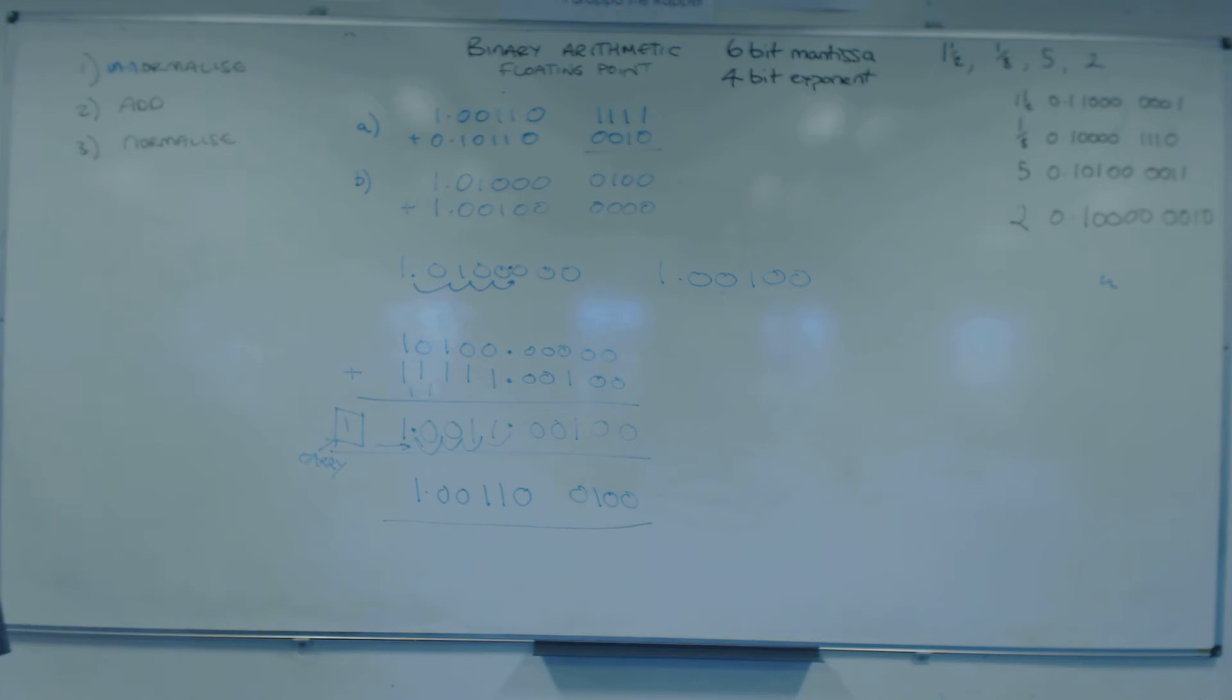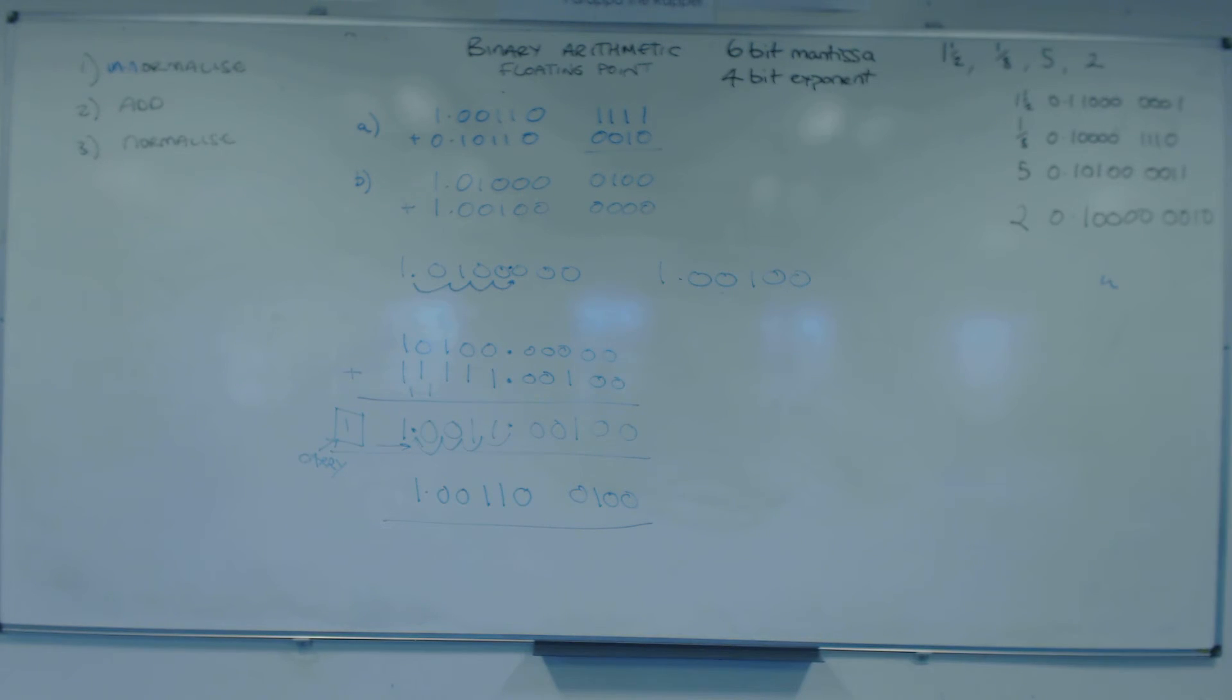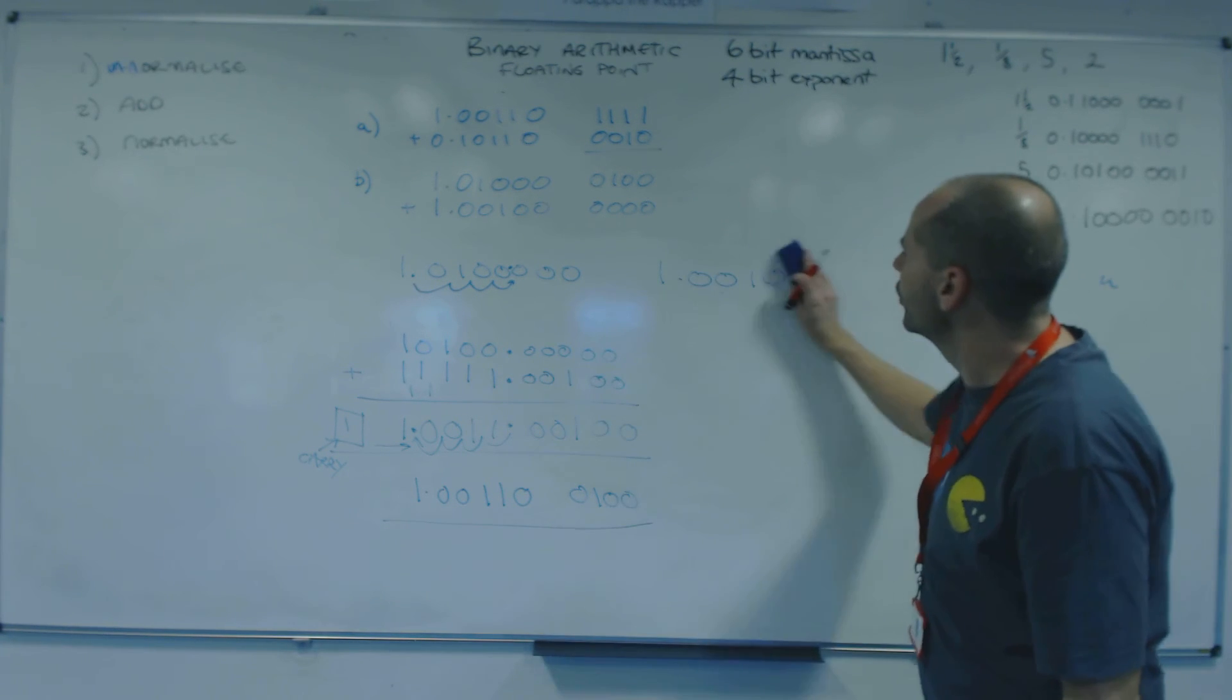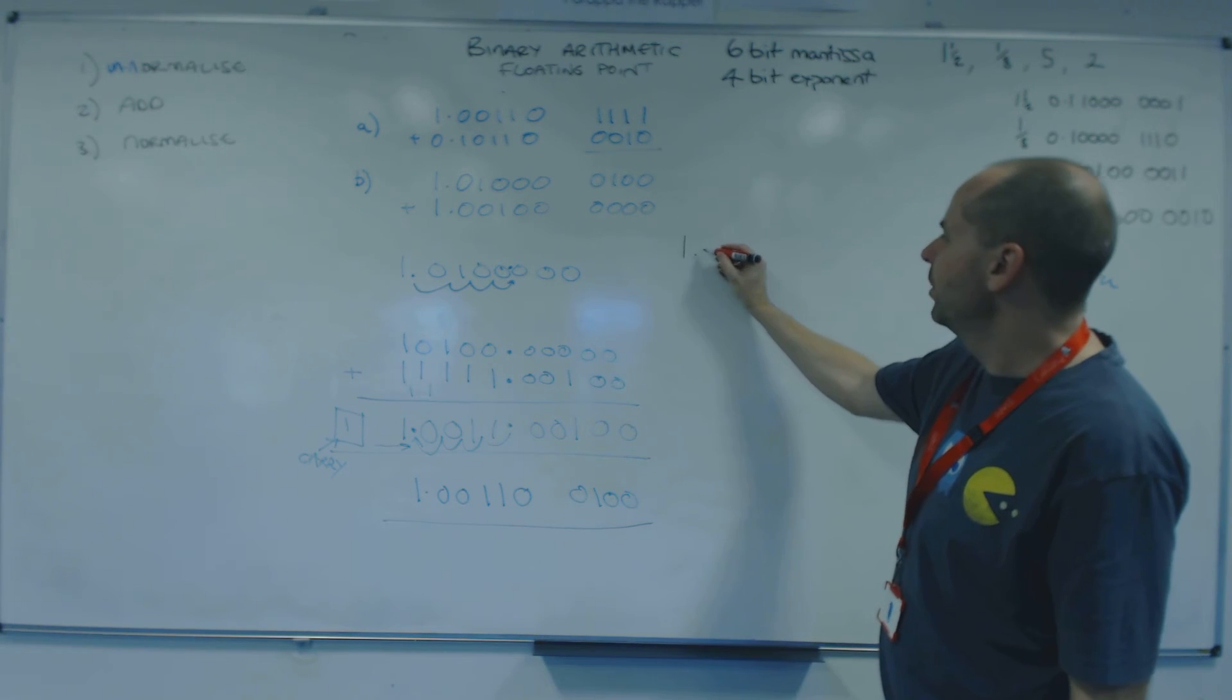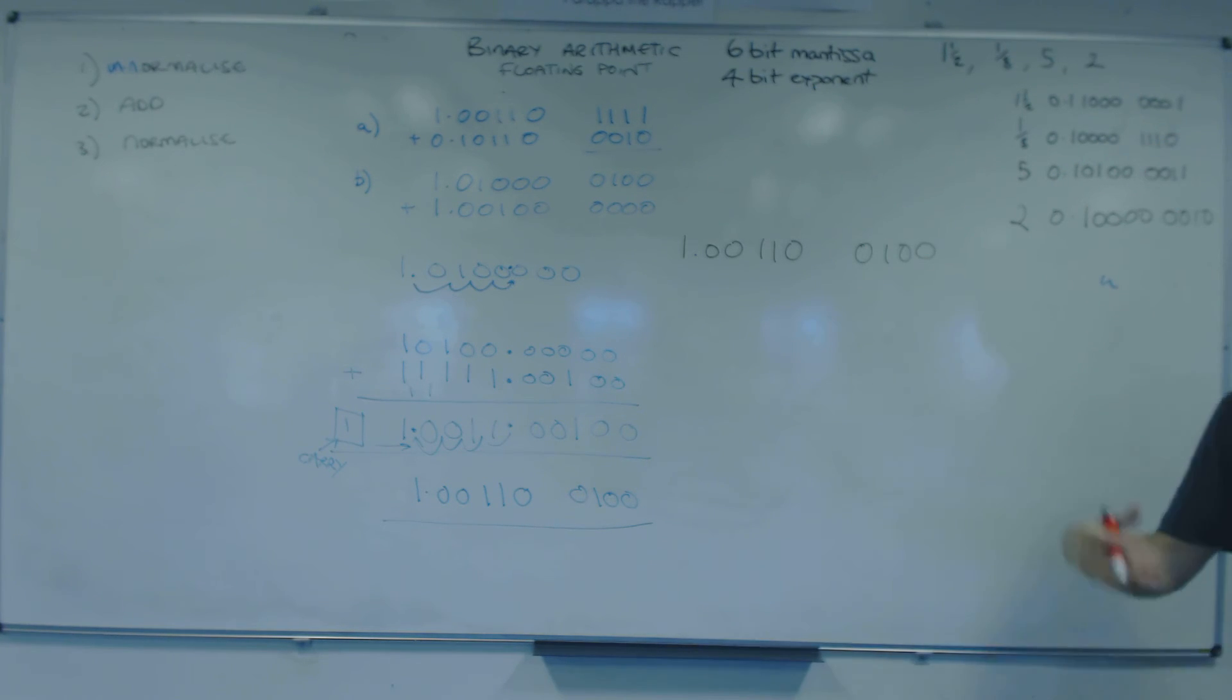Obviously, the more steps you have in questions, the more chances there are to make mistakes. Right. Just as a little exercise, let's just find out what this number is. Because it's a floating point number and it's negative. So if we've got a floating point number, our first step always is to look at the exponent. The exponent is plus 4. So we're going to un-normalise it and then we can mess about.